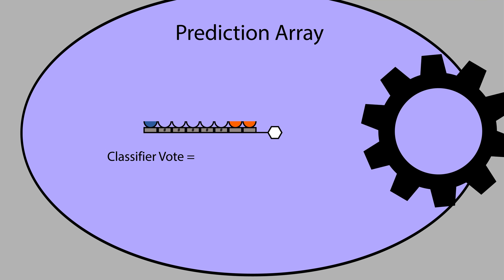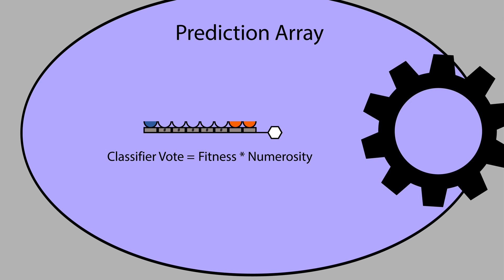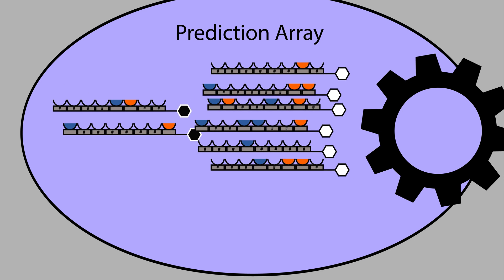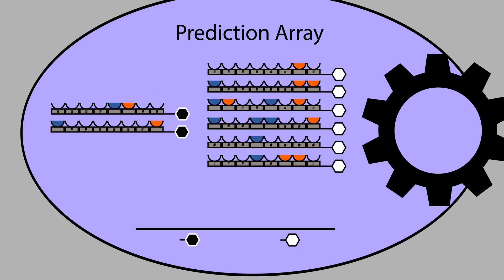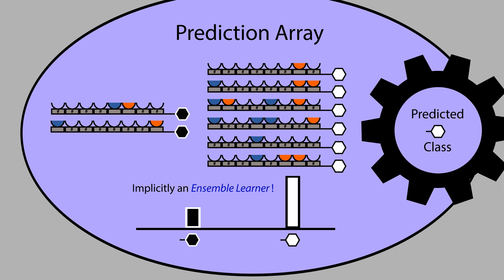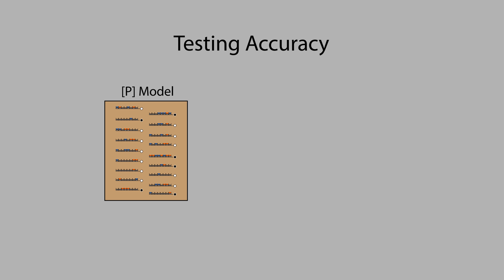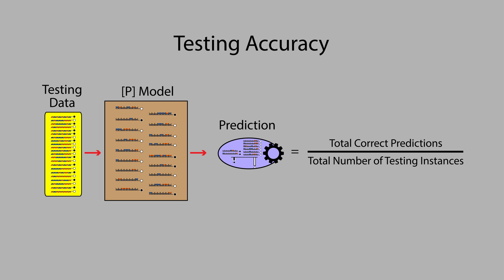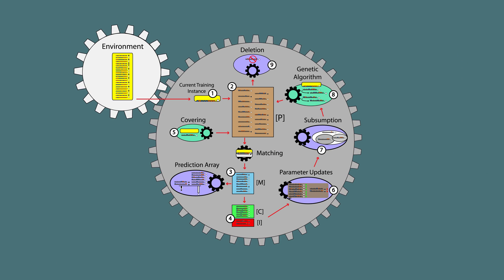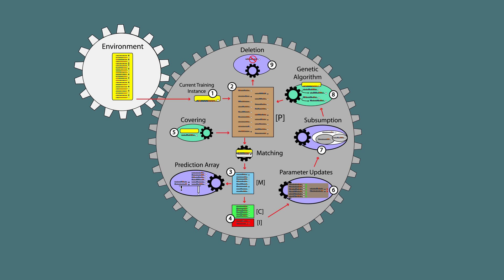The vote of each classifier is typically proportional to its fitness and numerosity. One of the simplest voting schemes is to sum the votes of all rules proposing the same class and choose the class with the highest overall vote. A number of alternative prediction schemes have also been proposed. The testing accuracy of LCS as a prediction machine is the proportion of correct predictions made by the prediction array over the entire testing dataset. The prediction array could also be applied during LCS learning to estimate training accuracy of the rule population as it evolves.